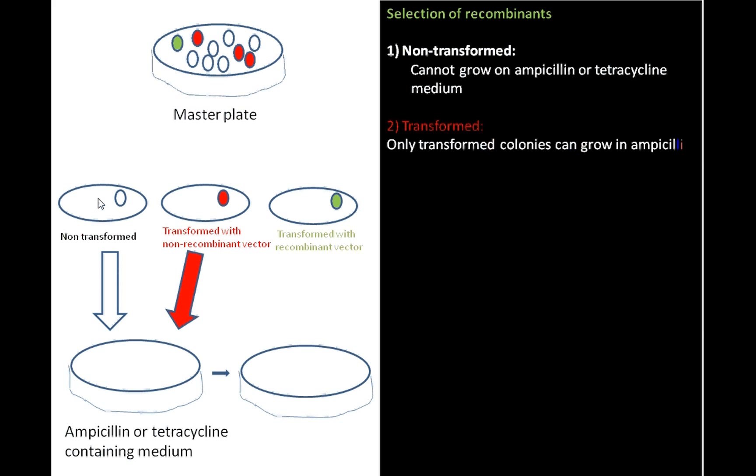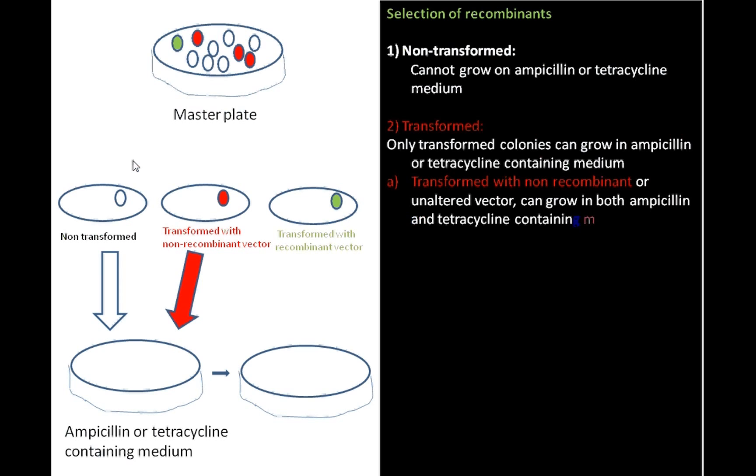Now, the second category, that is transformed with non-recombinant vector. Transformed ones with non-recombinant vectors have both ampicillin and tetracycline region so that it can grow in both ampicillin and tetracycline-containing medium. So, it will form colonies right here.